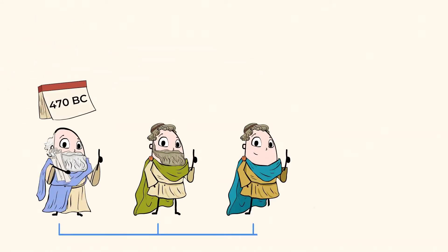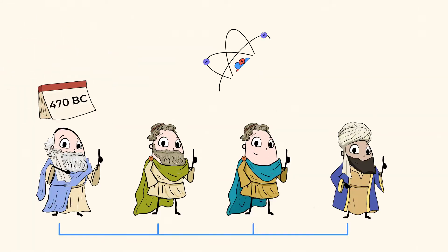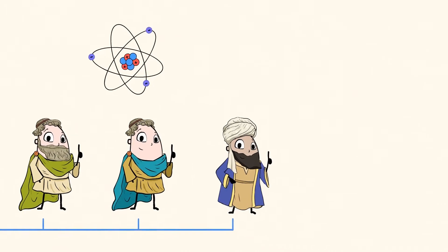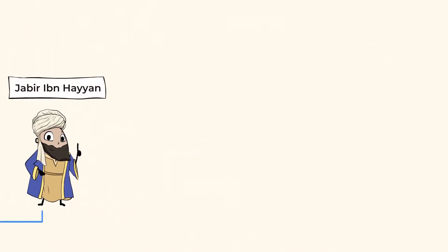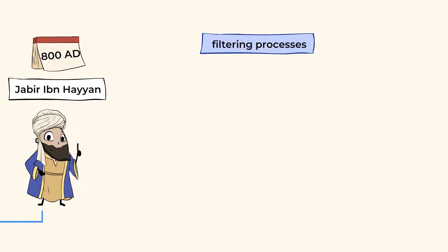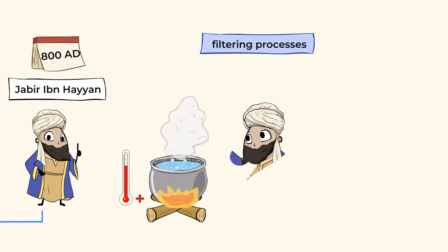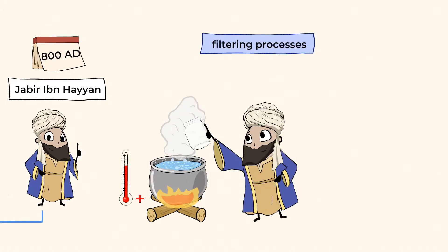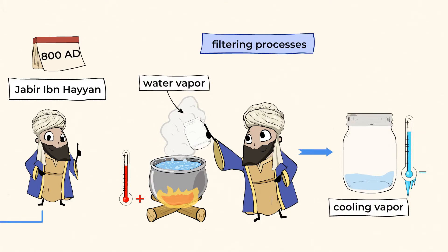And so the atomic theory was born. Scientists continued to explore and experiment with this theory for thousands of years. A scientist named Jabir Ibrahim developed filtering processes through boiling substances, collecting vapor, and then cooling the vapor. This process broke substances down into pure substances like water and sugar.